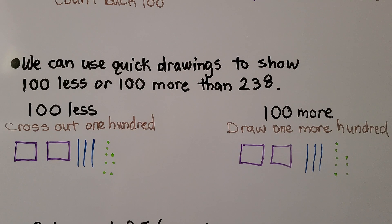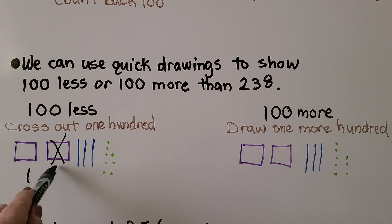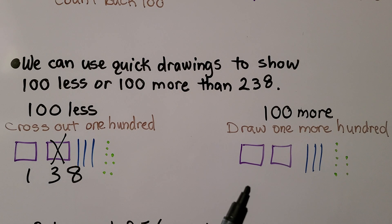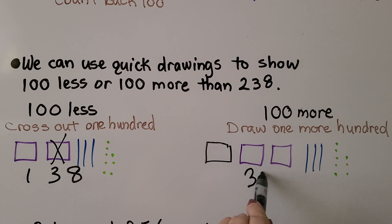We can use quick drawings to show 100 less or 100 more than 238. For 100 less than 238, we cross out 100. Now we have 138 — we have 100, 3 tens, and 8 ones. For 100 more, we just draw another 100. Now we have 338.